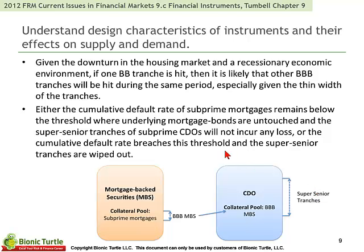The authors suggest that given the downturn in the housing market and the recessionary economic environment, if one of the double-B tranches is hit, then it's likely that the triple-B tranches will also be hit during the same period, especially given the thin width of the tranches. Either the cumulative default rate of subprime mortgages remains below the threshold,